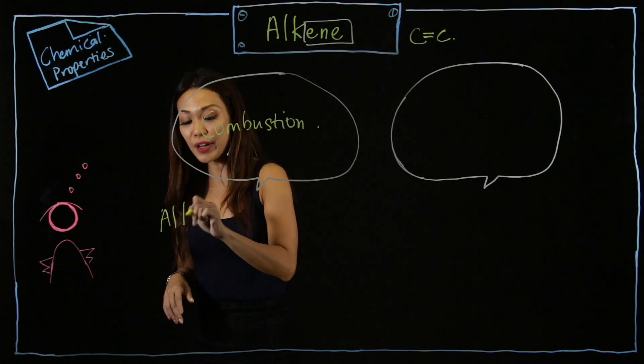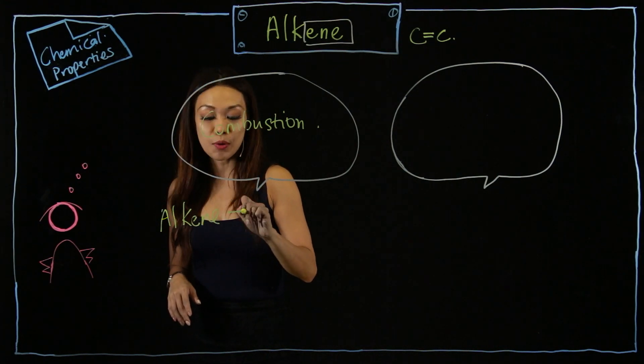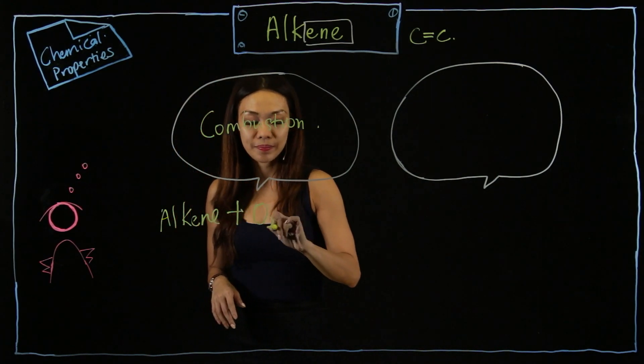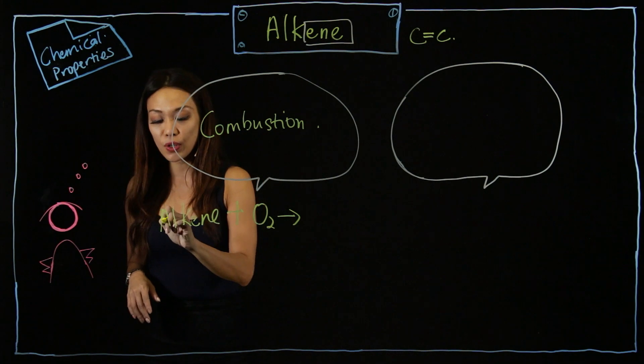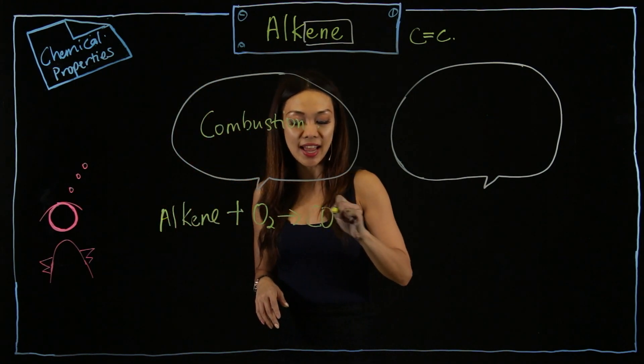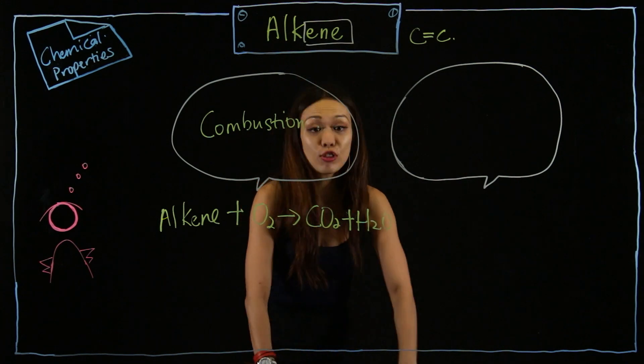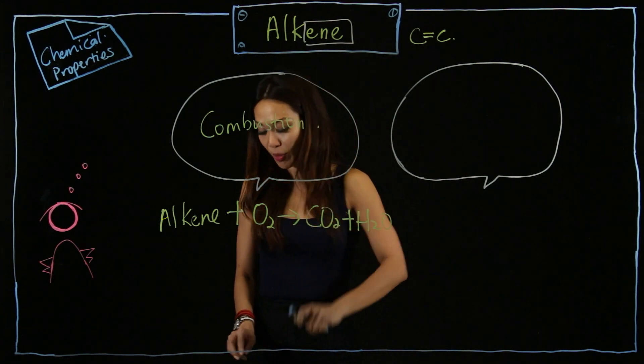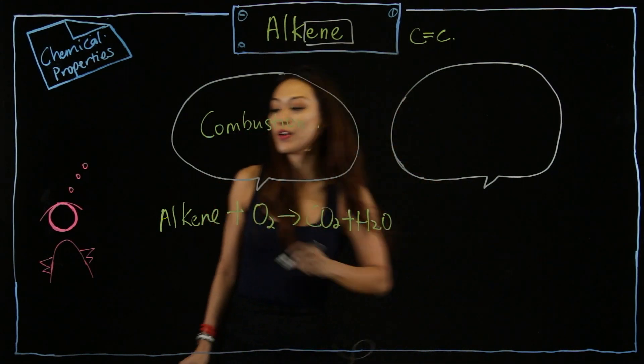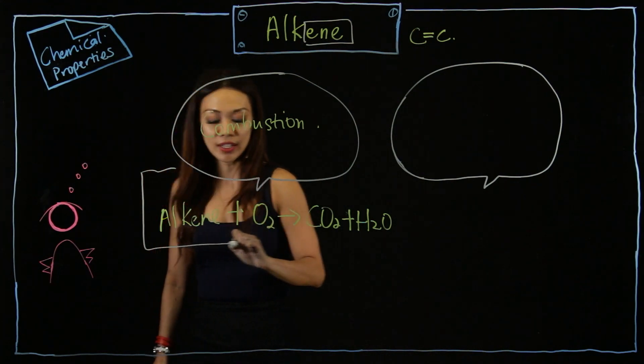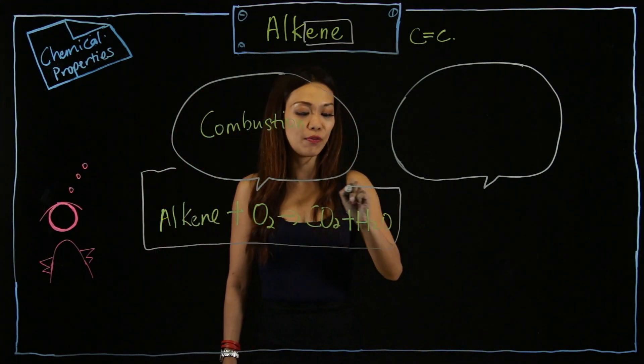Alkene will react with oxygen to produce carbon dioxide and water. Your job is to balance the equation. I'm going to use a container to box this up nicely for you.